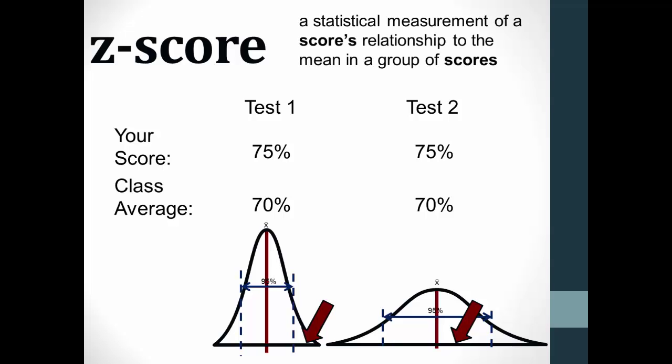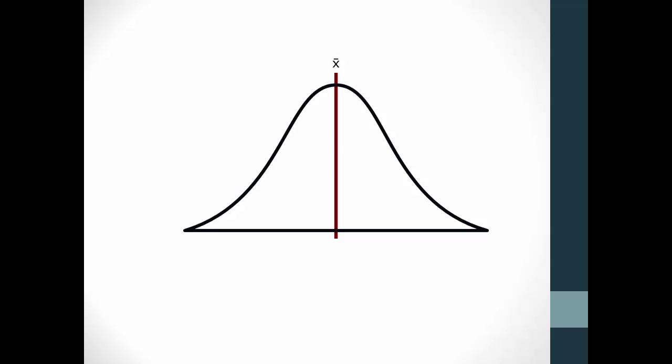Think of the z-score as a statistical measurement of a score's relationship to the mean in a group of scores, how you really did when compared to the rest of your classmates. Z-scores measure the distance between a particular score and the mean. It's really explaining how many standard deviations a score is away from the mean. Let's do a quick review of standard deviation, which should help you better understand z-scores.